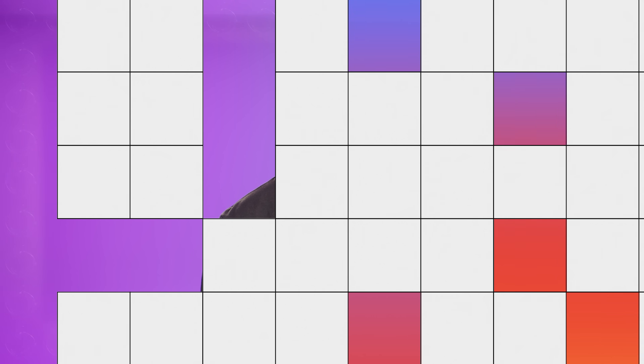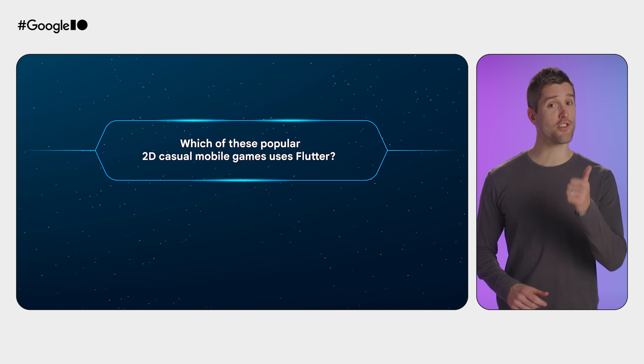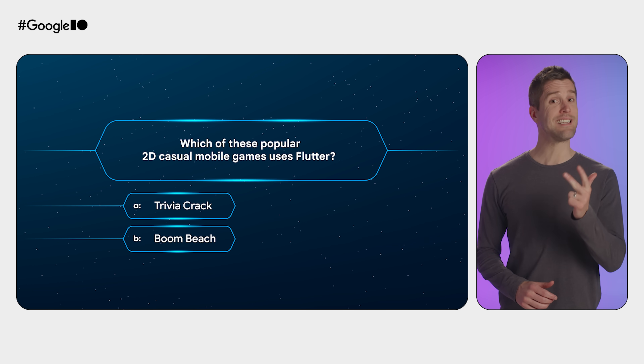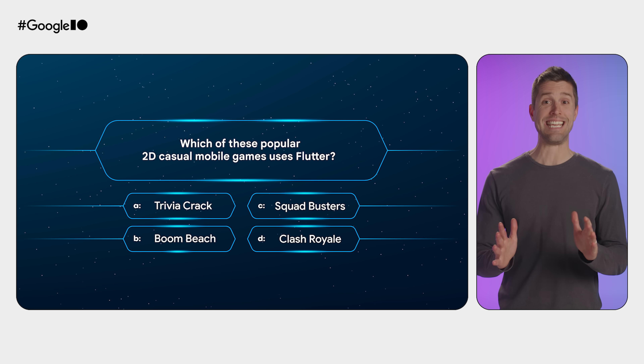Let's flop on over to see what Craig's been up to. It's time for a little trivia: which of these popular 2D casual mobile games uses Flutter? Options are A, Trivia Crack; B, Boom Beach; C, Squad Busters; and D, Clash Royale. If you guessed E — all of the above — you'd be correct. Some games like Trivia Crack write their entire game in Flutter, while other games like Clash Royale use Flutter for non-gaming UI like sign-up flows. Not all Flutter games' use cases are the same. We like variety around here — it keeps us and hopefully you entertained.